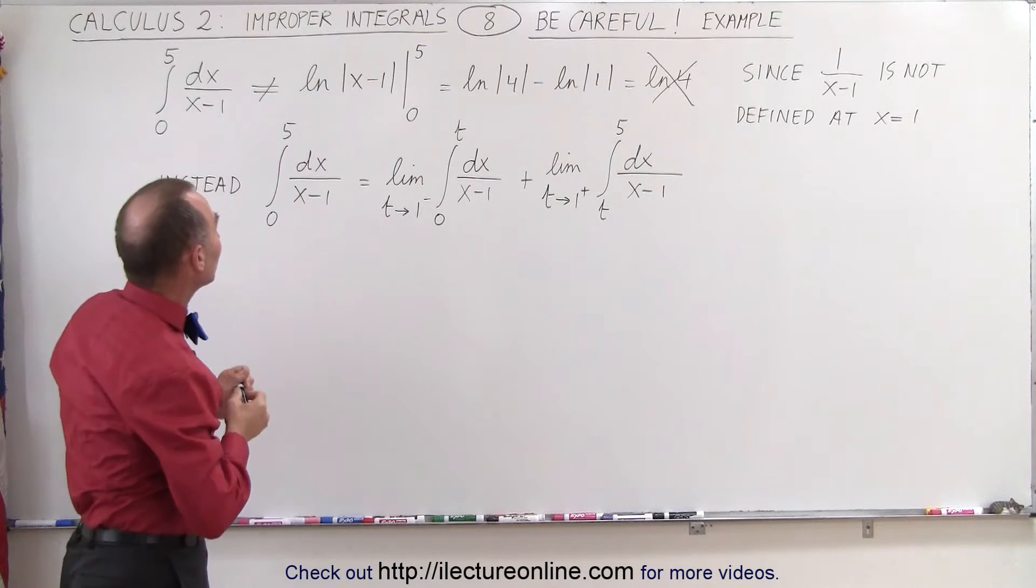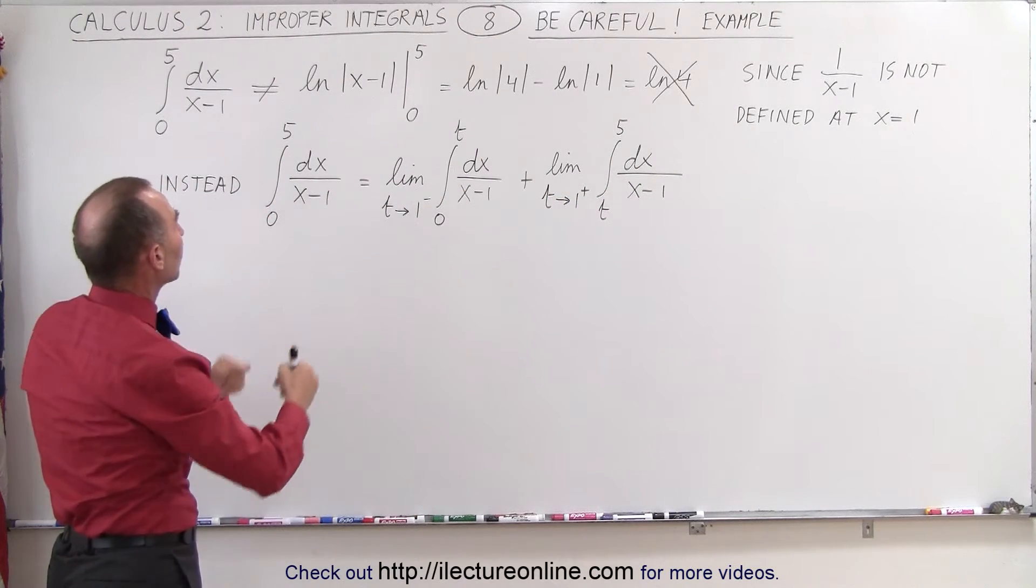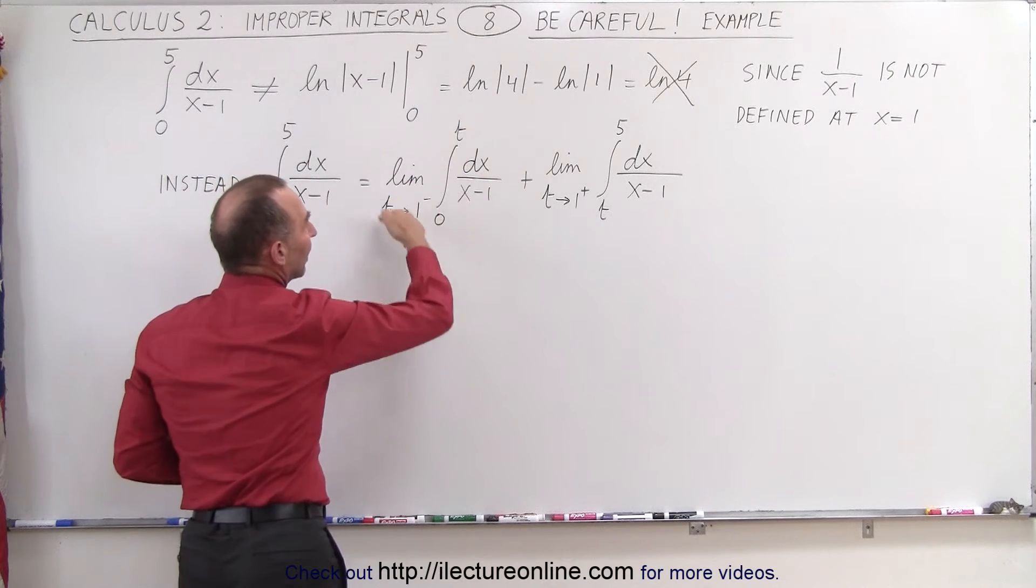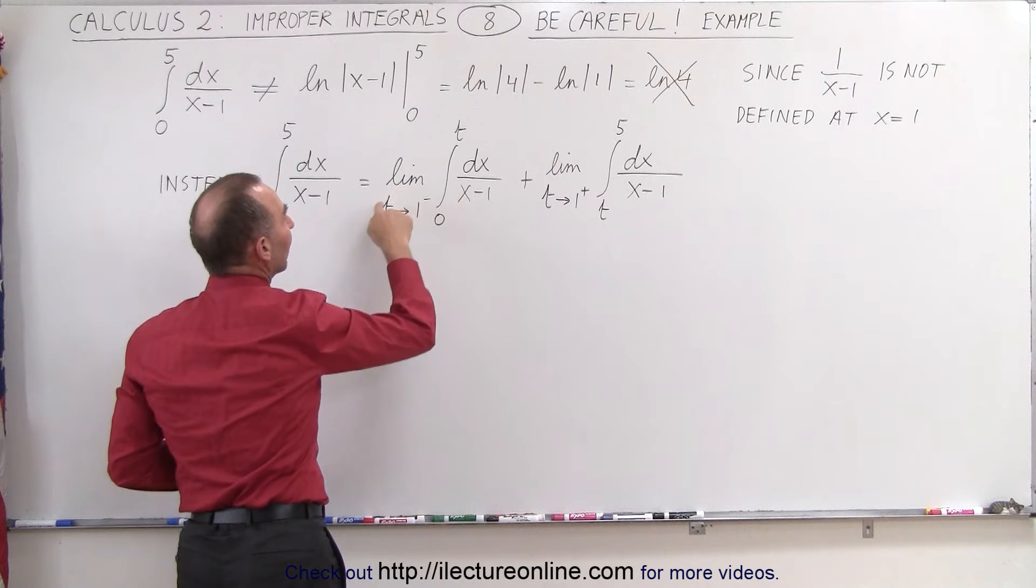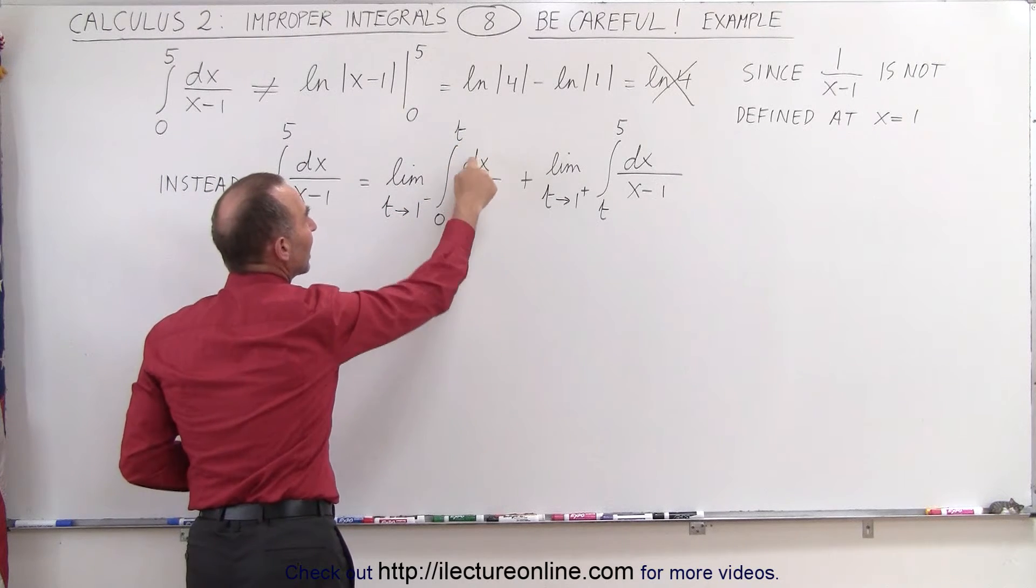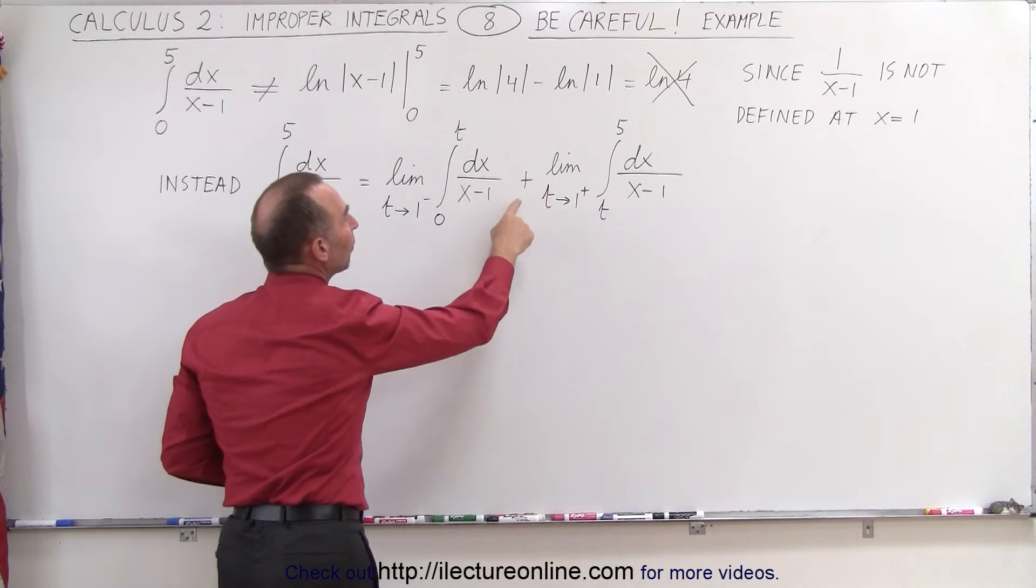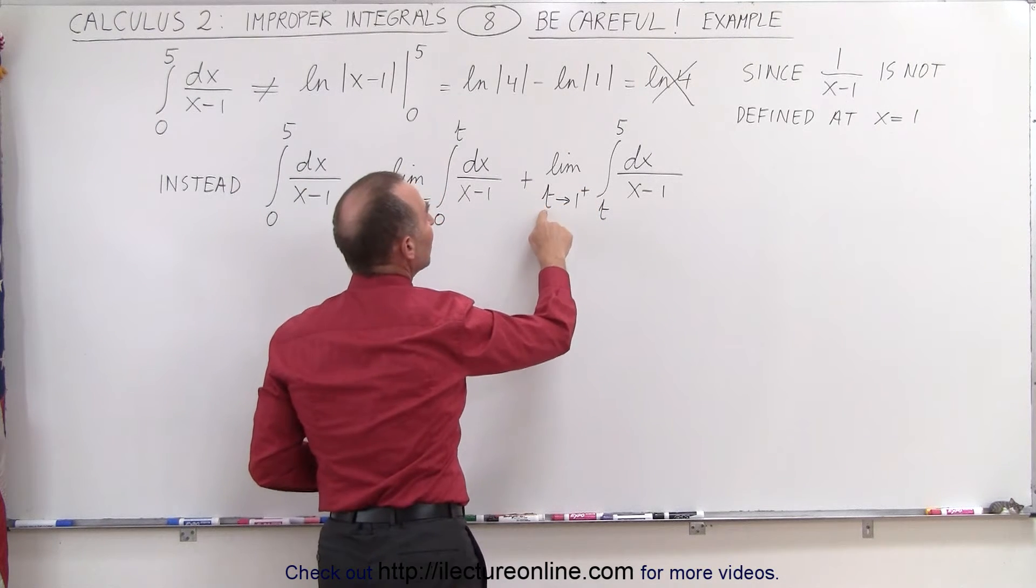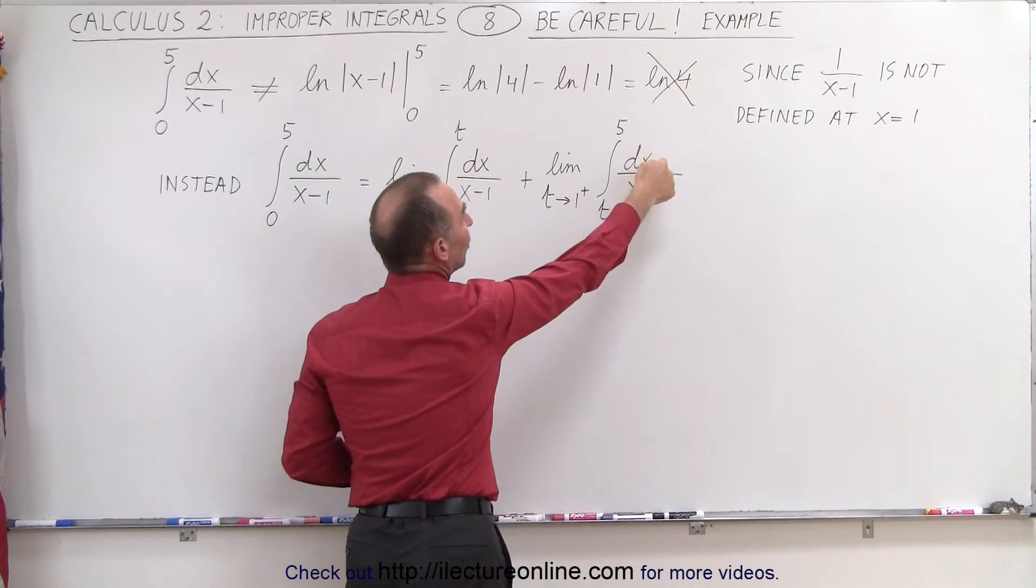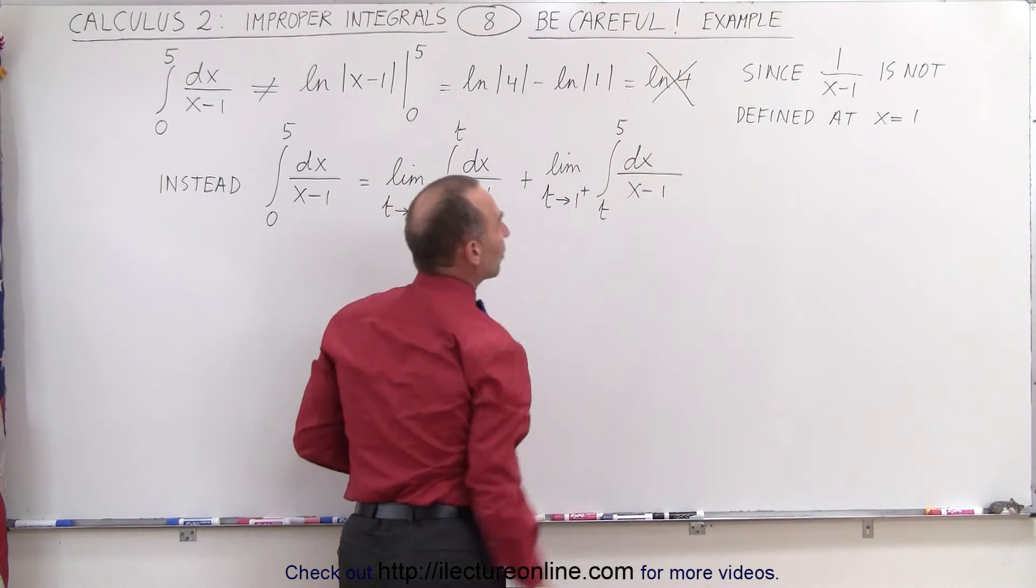So instead what we have to do is break it up into two integrals. We have our first integral from 0 to 1 and we're going to write it as a limit: the limit as t approaches 1 from below of the integral from 0 to t of dx divided by x minus 1, plus the limit as t approaches 1 from above of the integral from 1 to 5 of dx over x minus 1.